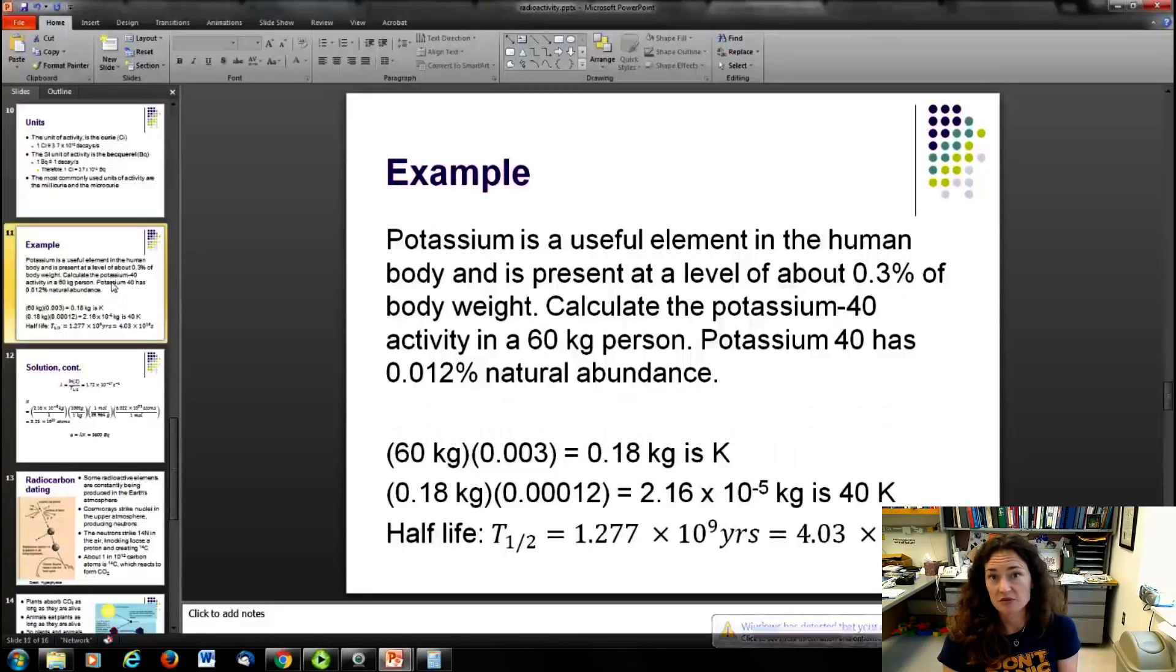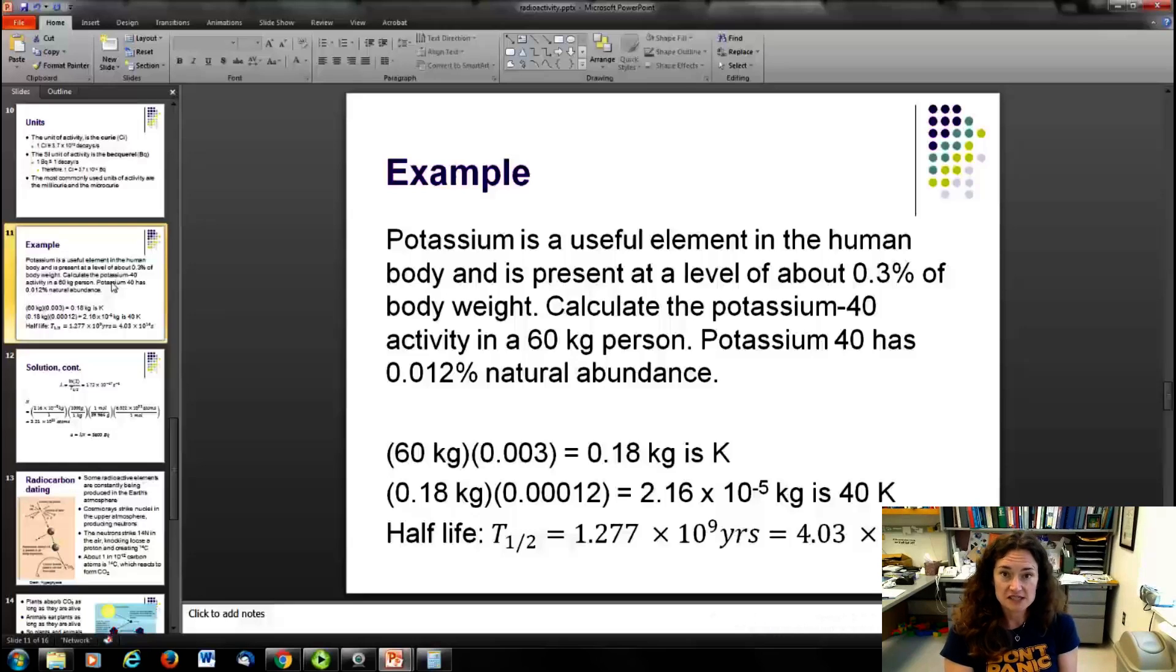I think it's helpful at this time to just work a couple of example problems. I think that'll help cement it in your head. So, first example, potassium is a useful element in the human body, and it's present at a level of about 0.3% of your body weight. Now, some of that is going to be a radioactive form of potassium known as potassium-40. Potassium-40 has about a 0.012% natural abundance. And so the question says, calculate the potassium-40 activity in a 60 kilogram person. So 60 kilograms, about 0.3% or 0.003 times 60 kilograms, gives you 0.18 kilograms of a person that is potassium. So out of a normal person like myself, you've got about 0.18 kilograms that's just potassium. Now, not all of that is the radioactive potassium-40. Only about 0.012% of that amount, so 0.18 times 0.00012, giving you 2.16 times 10 to the minus 5 kilograms is potassium-40.